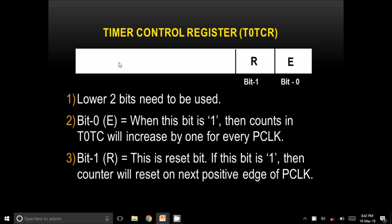The second register is the Timer Control Register T0TCR. It has two bits: E (enable) and R (reset). When the enable bit is made 1, the timer value automatically increases by 1 after each tick of the P-clock. If the R bit is made 1, the timer value suddenly becomes 0 at the next positive edge of the peripheral clock.